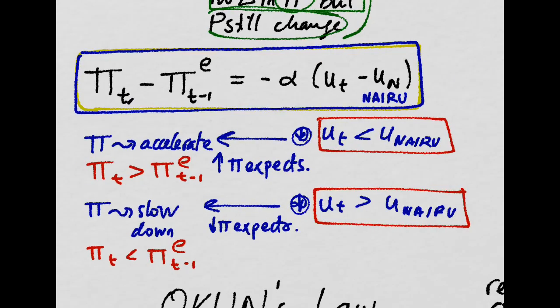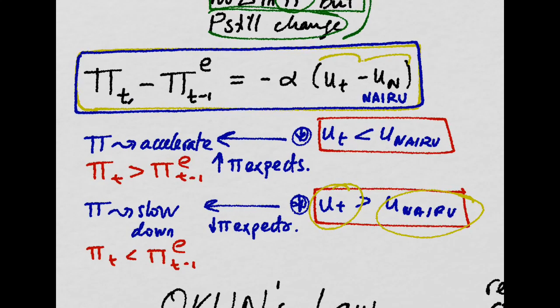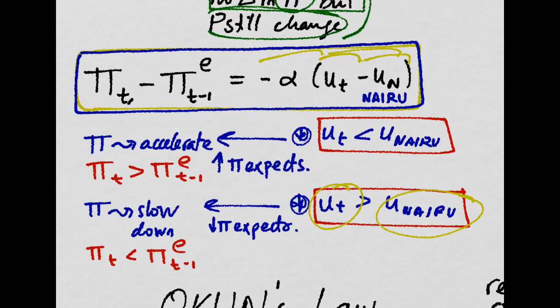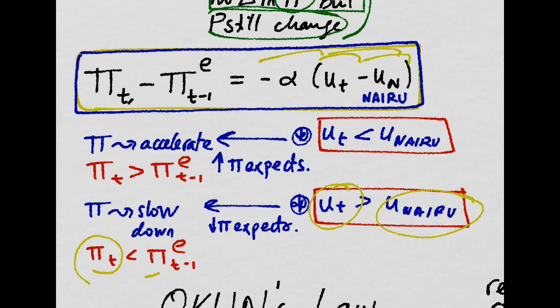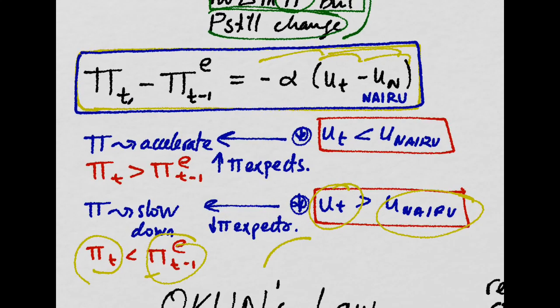In the other case, in which your current unemployment rate is higher than the NAIRU, this is positive, this is negative, and inflation right now is lower than what you expected. So, the inflation rate is slowing down.